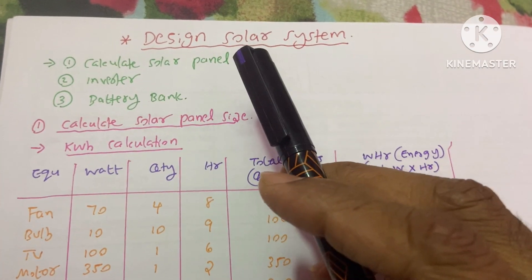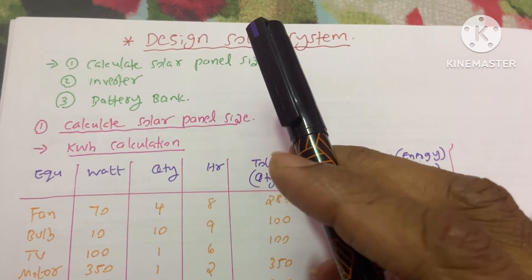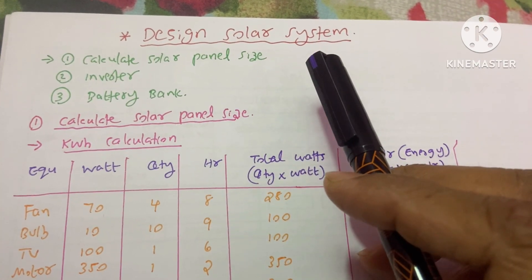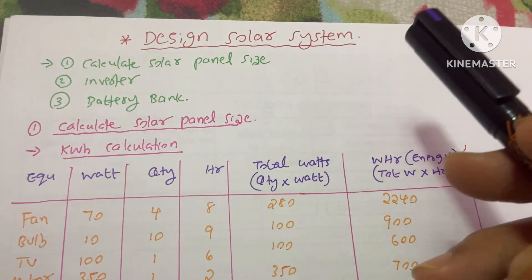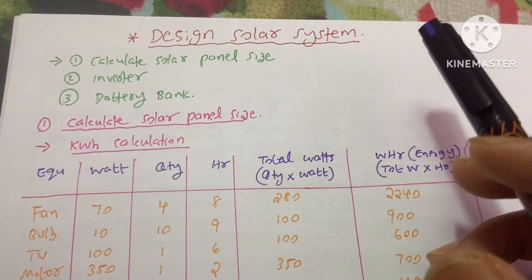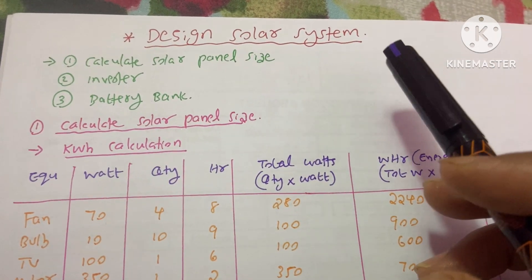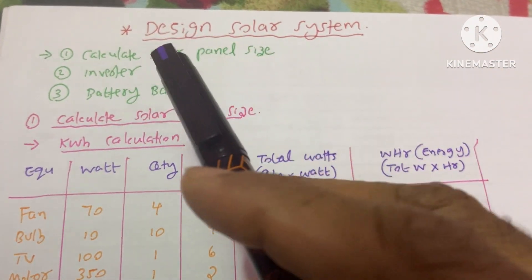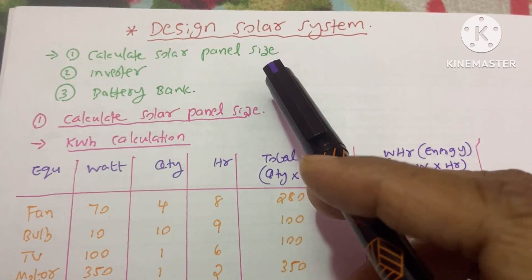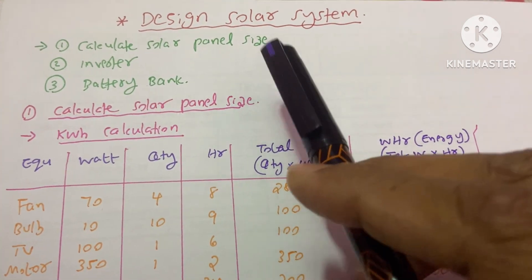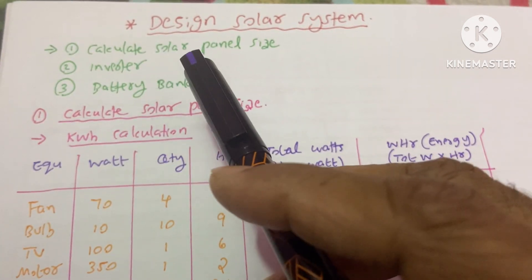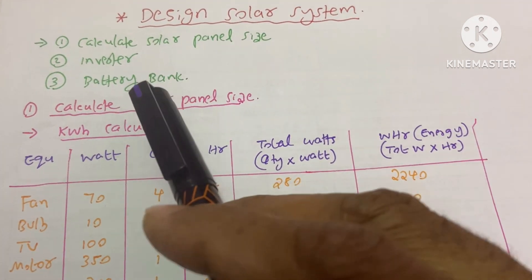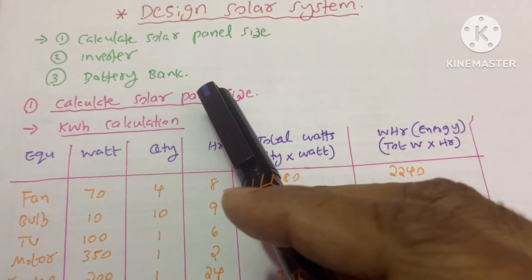Today's topic is how to design a solar system for your house or office. We will first calculate solar panel size, second calculate the inverter size, and third calculate the battery bank.